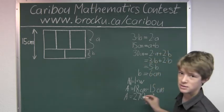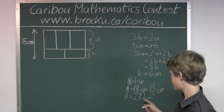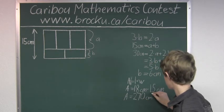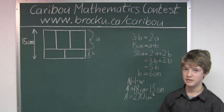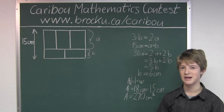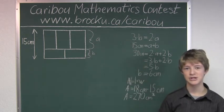So we know that the total area which the five identical rectangles cover is 270 centimeters squared. If you'd like to know more about this contest, please feel free to visit our website at www.brocku.ca/caribou.